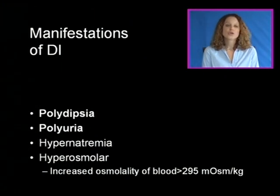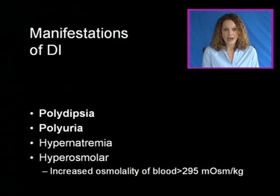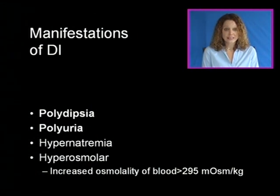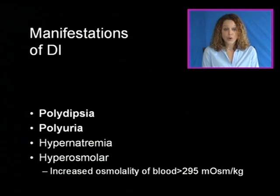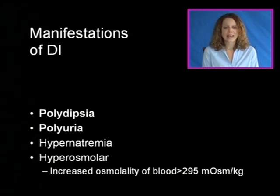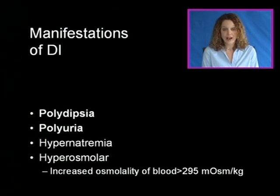Manifestations of DI include polydipsia, which is excessive thirst, and polyuria, which is characterized by excessive urination. Also present are hypernatremia, or increased sodium levels, and hyperosmolality, meaning increased osmolality of the blood — usually greater than 295 milliosmoles per kilogram.